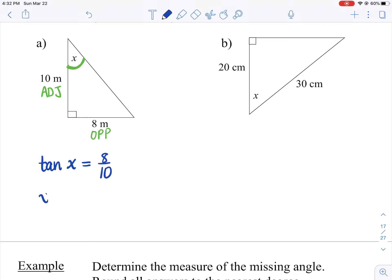To get the X by itself, this is where you inverse both sides with tan. So you'll tan inverse both sides. So tan inverse of 8 tenths.